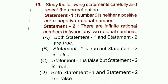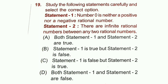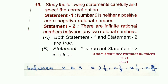Question 19: Statement 1 — 0 is neither a positive nor a negative rational number. Correct, as the number line shows positive numbers to the right and negative to the left, with 0 in between. Statement 2 — There are infinitely many rational numbers between any two rational numbers. Correct: for example, between 2 and 3 there exist 2½, 2⅓, 2¼, and infinitely more. Both statements are true. Option A is correct.